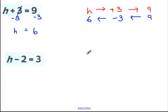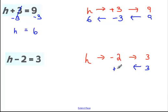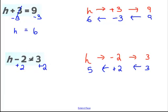Next example: our unknown is still H, but here we're subtracting 2 and getting an answer of 3. Working backwards: start with 3, instead of subtracting 2 we add 2, giving H equals 5. Algebraically, the opposite of subtract 2 is add 2; adding 2 to both sides leaves minus 2 plus 2 equals 0 on the left, so H is equal to 3 plus 2, which is 5.